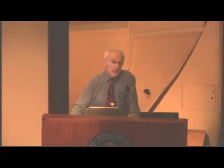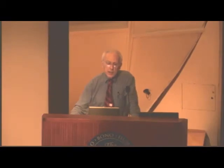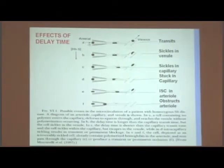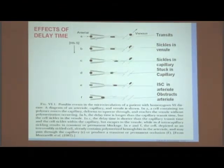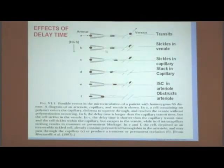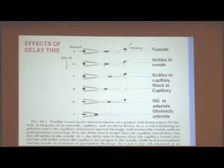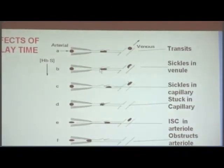So what's the mechanism? The red cells come out of the lungs. Let's assume they have no polymer in there because they've been in the lungs, seen oxygen, and all the polymers dissolve. It goes down the big arteries — the aorta and so forth — and comes to the small arteries, the arterioles. Eventually it gets into the capillaries, where it loses oxygen to the tissues, and therefore it starts to gel.